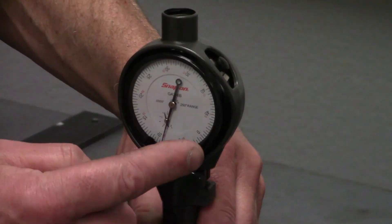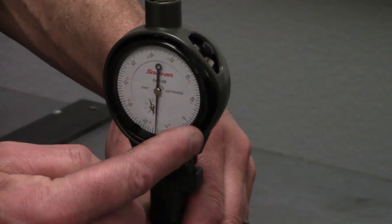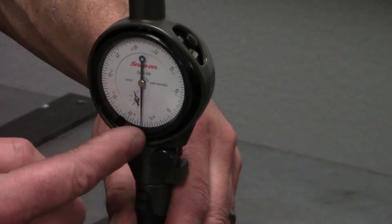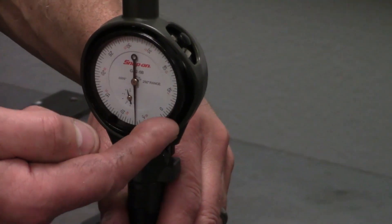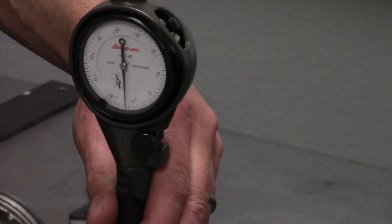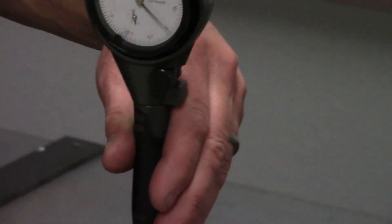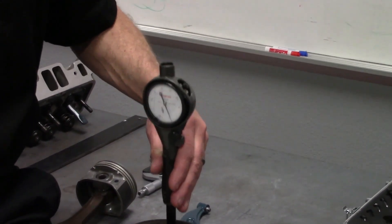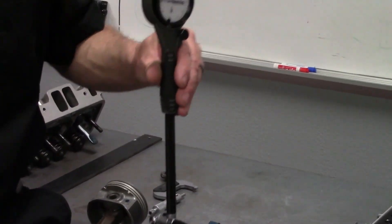Keep in mind this bore gauge is getting bigger going this way, and it gets smaller going back behind zero this way because it is an inside diameter. So we're going to check top, middle, and bottom, and then for out of round.